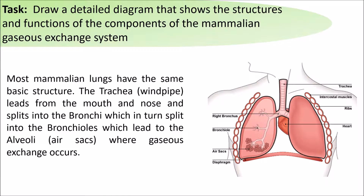Most mammalian lungs have the same basic structure. They've got a trachea which leads from the mouth and the nose and splits into bronchi, which in turn splits into bronchioles, which leads to the alveoli found in the lungs. Remember, the alveoli is where gaseous exchange is taking place.